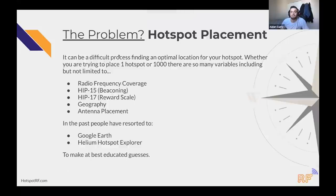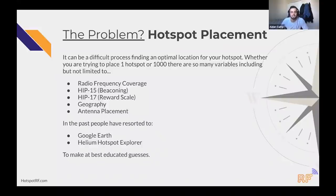The tool is called Hotspot RF. Placing hotspots is a very difficult problem — RF data is extremely opaque, most people don't have a good understanding of it. There's a lot of helium knowledge needed, such as HIP-15, HIP-17, reward scaling, geography, and antenna placement. In the past I was using Google Earth, downloading KMZ files of existing hotspots, pivoting around trying to see if there were mountains nearby, maybe using some RF modeling tool. It was generally a pretty time-consuming process and I was making educated guesses at best.